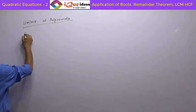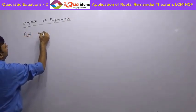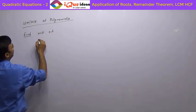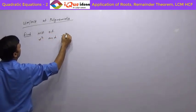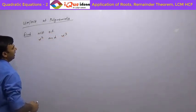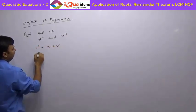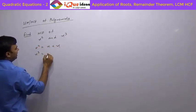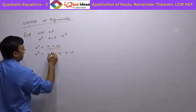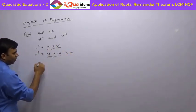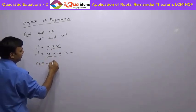Let us say, find HCF of x square and x cube. Now x square is equal to x into x, and x cube is equal to x into x into x. Look at the common part — whatever is maximum common will be the HCF. So it is x square.